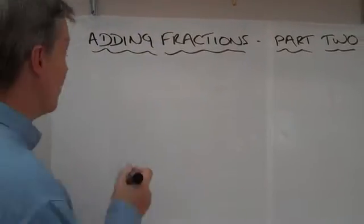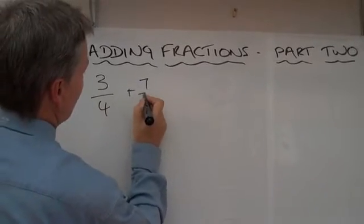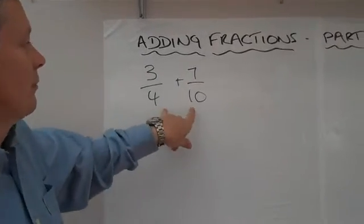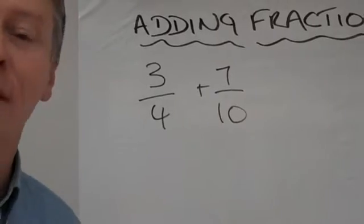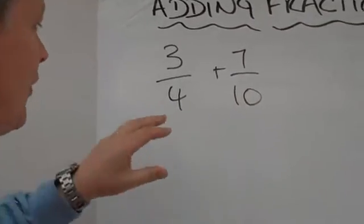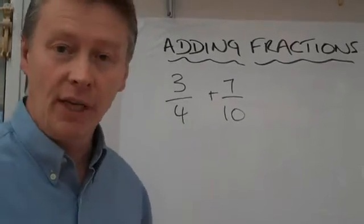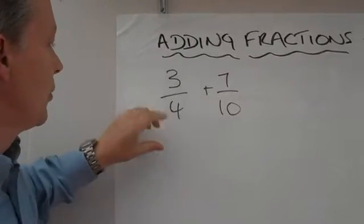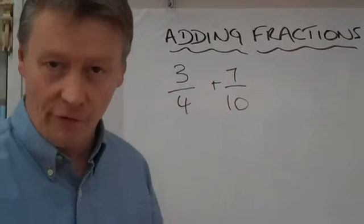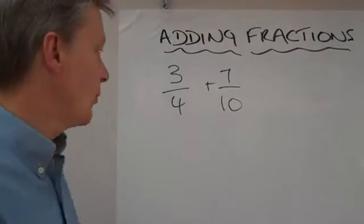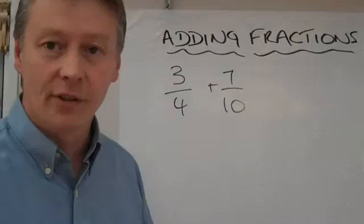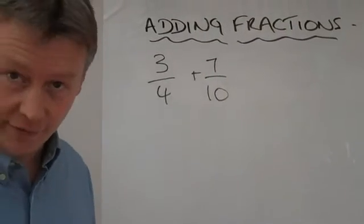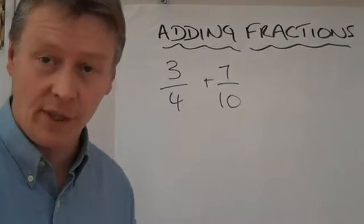So the question I'm going to ask is three quarters plus seven tenths. Now as we said before in part one, it's important these two numbers are exactly the same. The denominator is exactly the same. Now, if you multiply the two together, then it means that you can have both of them fortieths. Or the other way of doing it is saying, well, actually both numbers will go into the number 20. So, four will go to the number 20 five times, and ten will go to the number 20 twice.